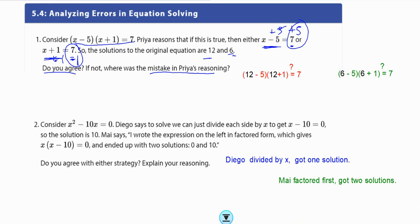But do we agree with this reasoning? One method you may have tried is you may have tried plugging 12 in and 6 into the equation. If you did that, 12 minus 5 is 7, and 7 times 13, does that equal 7? Obviously not. No, no. That's not going to work. And then 6 minus 5 would be 1, and 6 plus 1 is 7. So, 1 times 7 does equal 7. Wow. So, she did stumble upon a correct answer.